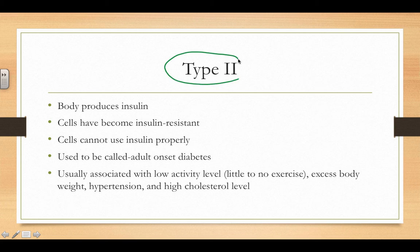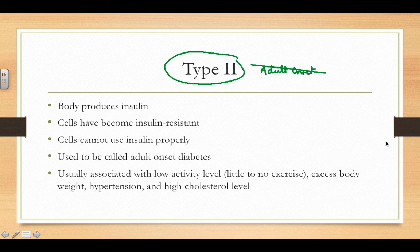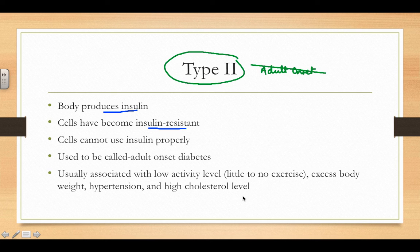Type 2 diabetes — this is the type my dad had. It used to be called adult-onset diabetes, but it's no longer called that because unfortunately kids as young as five or six are getting it too. Type 2 is when your body does produce insulin, but your cells no longer want to respond to it — they've become insulin resistant. Contributing factors include lack of exercise, excess body weight, hypertension, and high cholesterol levels.